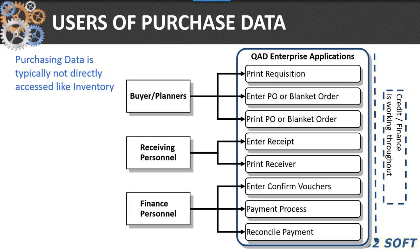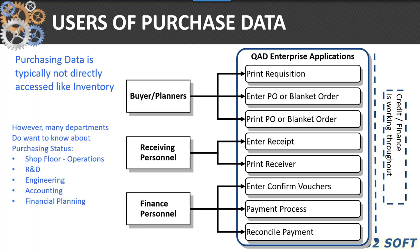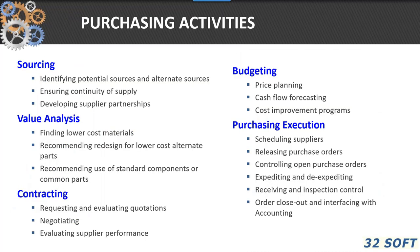There are lots of users of purchase data — primarily buyers, receiving personnel, and finance personnel. They handle the receipt of requisitions, entering POs, receiving product, confirming vouchers, the payment process, and reconciliation. But there are many other departments within the organization that still want to know about purchasing status: shop floor, R&D, engineering defining part numbers, and obviously accounting and financial planning. As we saw with inventory, there are a lot of people who use purchasing data, and we want to make sure it's as accurate and on time as possible.